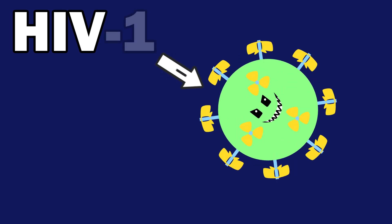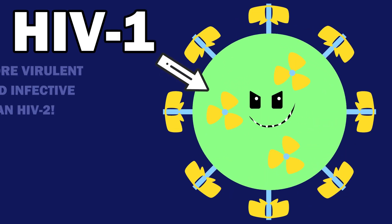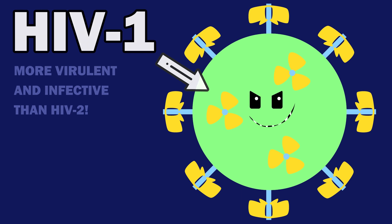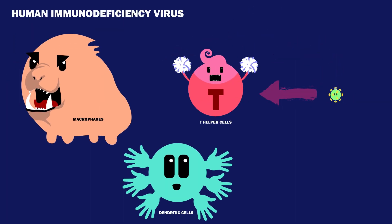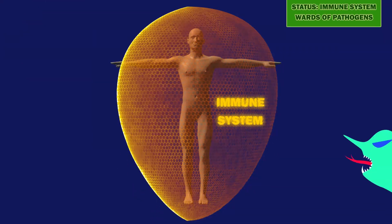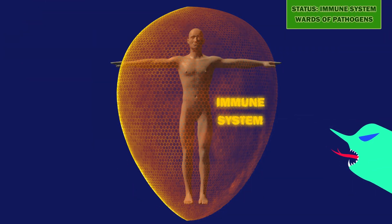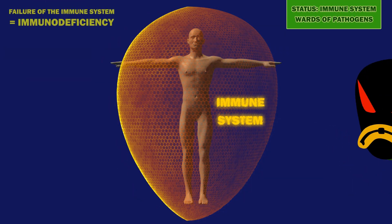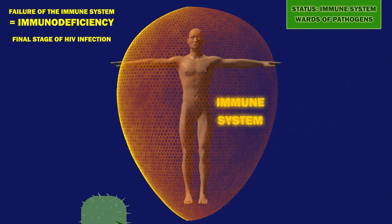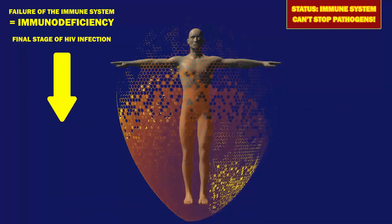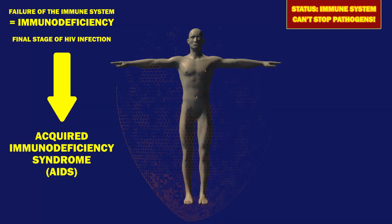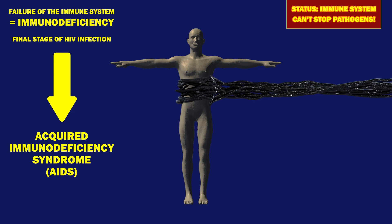The name HIV almost always refers to HIV-1, the more virulent and infective type. The human immunodeficiency virus, or HIV, targets cells of the immune system. When the immune system starts to fail, this is termed immunodeficiency. In the final stage of the disease's progression, a patient is said to have Acquired Immunodeficiency Syndrome, or AIDS.